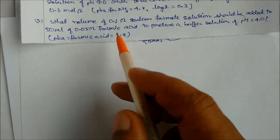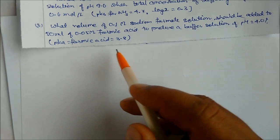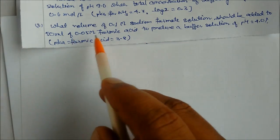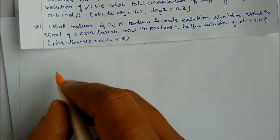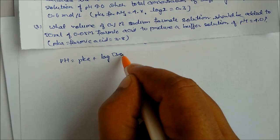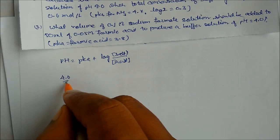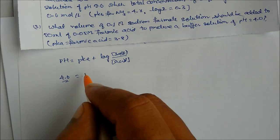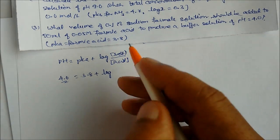Third question: what volume of sodium formate solution should be added to 50 mL of 0.05 molarity formic acid to produce a buffer solution of pH = 4? pKa of formic acid is 3.8. Sodium formate molarity is given, and we need to find the volume. This is an acidic buffer, so pH = pKa + log([salt]/[acid]).